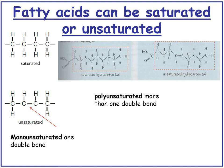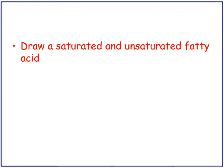Fatty acids can be either saturated or unsaturated. Saturated means they have all single bonds - they are fully hydrogenated with all hydrogens attached. An unsaturated hydrocarbon tail has at least one double bond. If it's monounsaturated, it has one double bond; if it's polyunsaturated, it has more than one double bond. Pause the video and draw a saturated and an unsaturated fatty acid, and explain what each of those words mean.